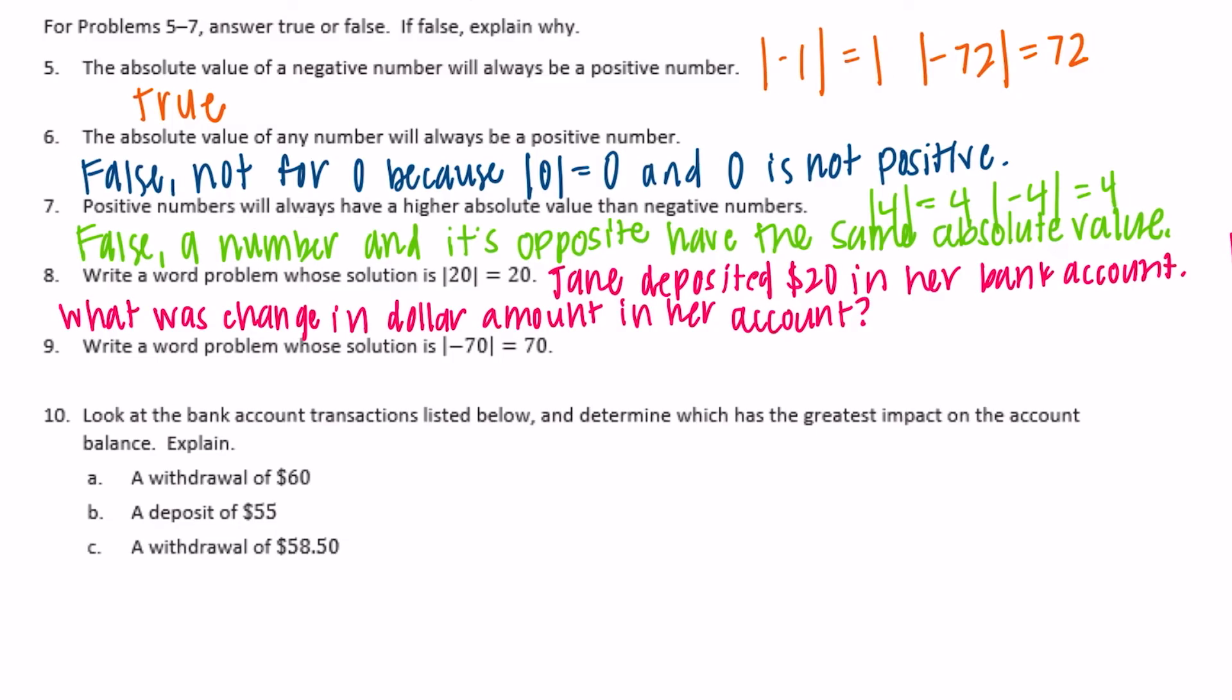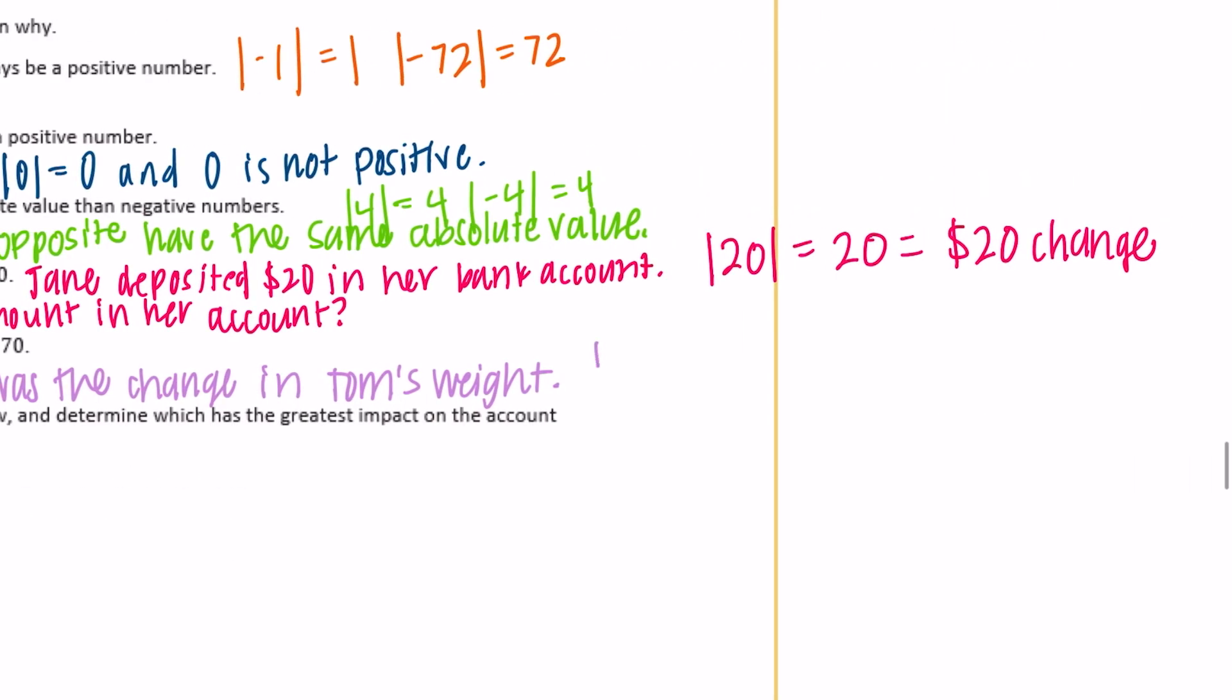Number 9: Write a word problem whose solution is |-70| = 70. Okay, so something we're losing, maybe someone lost weight. Let's say Tom lost 70 pounds. What was the change in Tom's weight? So we'd be finding the absolute value of negative 70, he lost 70. So the absolute value of negative 70 is 70. So he lost 70 pounds.